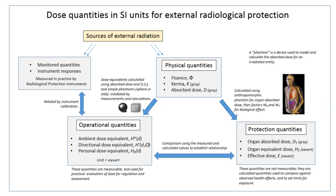The mechanism by which this occurs is well understood, but quantitative models predicting the level of risk remain controversial. The most widely accepted model posits that the incidence of cancers due to ionizing radiation increases linearly with effective radiation dose at a rate of 5.5% per sievert. If this linear model is correct, then natural background radiation is the most hazardous source of radiation to general public health, followed by medical imaging as a close second.